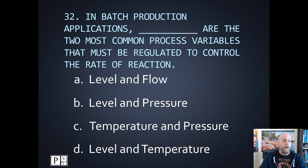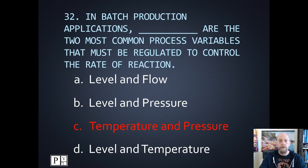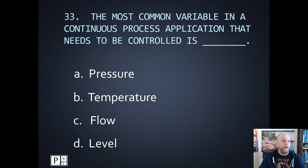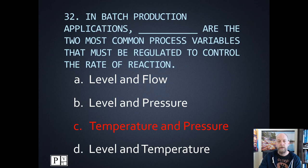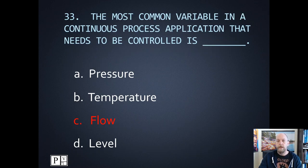Number thirty-two: in batch production applications, which ones are the most common process variables regulated to control the rate of reaction? The two that are used the most would be temperature and pressure. Number thirty-three: the most common variable in a continuous process application that needs to be controlled. The most common is temperature and pressure, and the thing that's usually controlled the most is a valve — so flow is our main thing we're controlling with that valve, which ultimately controls the temperature and pressure.